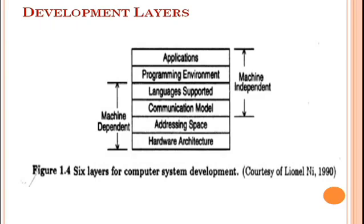The address space of a processor in a computer system varies among different architectures. It depends on memory organization, which is machine dependent. These features are up to the designers and should match the target application domains. Application programs and programming environments should be machine independent — that is, independent of machine architecture — so user programs can be ported to many computers with minimum conversion cost.